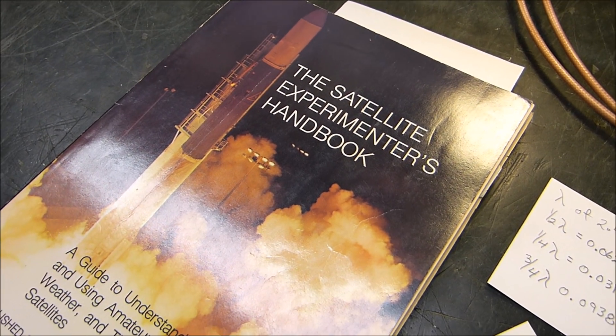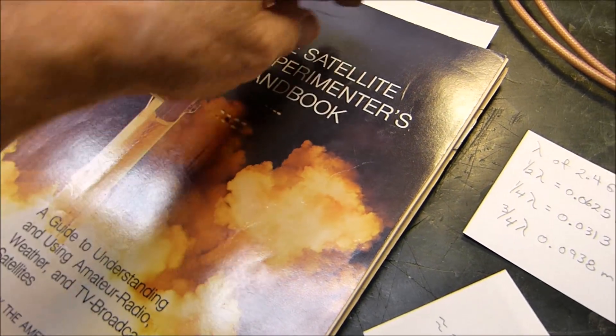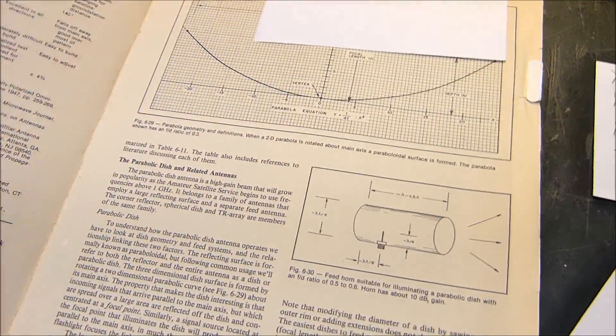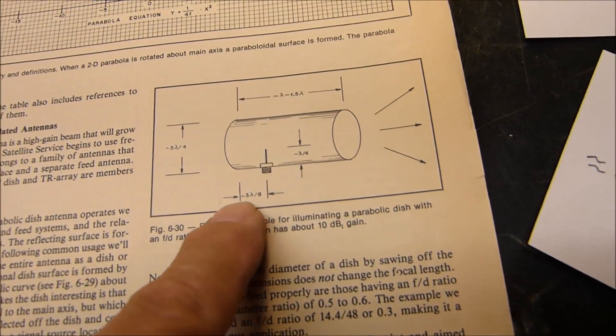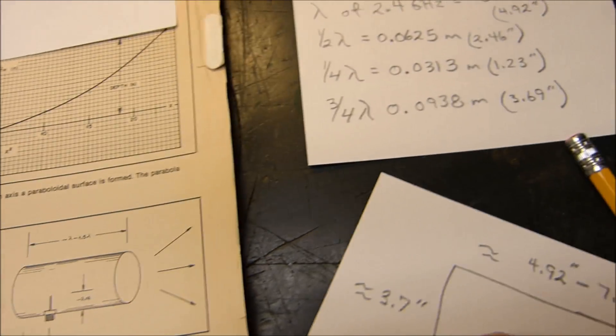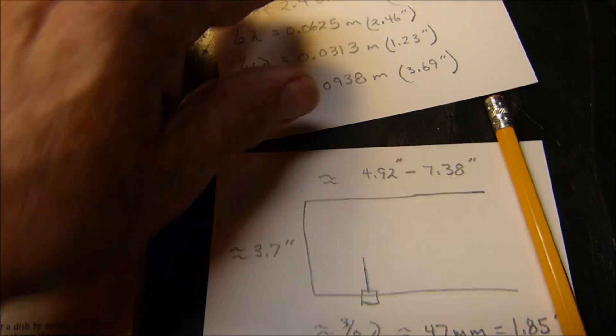Okay, let's take a look at this satellite experimenter's handbook. When I open it up, the glare goes away. And here's what we're going to really be interested in. Right here. I did all of the math over here, so you don't have to watch me fumble with a calculator.